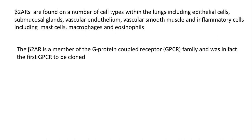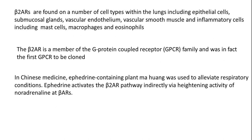Beta-2 adrenergic receptors are GPCRs, and in fact these were the first GPCRs to be cloned. In Chinese medicine, the ephedrine-containing plant mahuang was used to alleviate respiratory conditions, especially bronchial smooth muscle relaxation and asthma-like conditions. Scientists later found that ephedrine activates the beta-2 adrenergic pathway indirectly by increasing the activity of noradrenaline on beta-adrenergic receptors. The first drug approved for beta-2 agonistic activity was salbutamol.